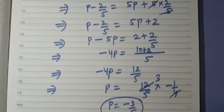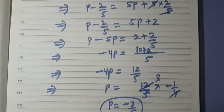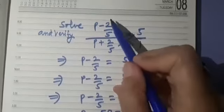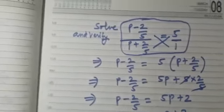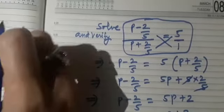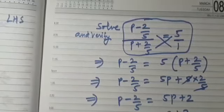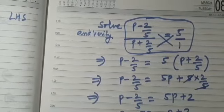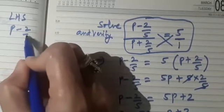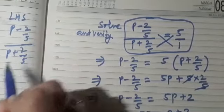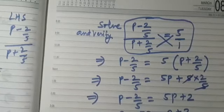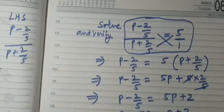Now we have to verify this. We substitute p = minus 3/5 into the left hand side of the equation. The left hand side is (p minus 2/5) upon (p plus 2/5), and we substitute p as minus 3 upon 5.